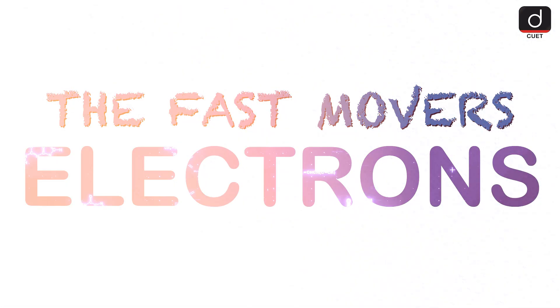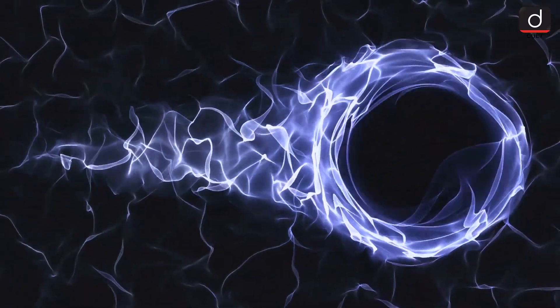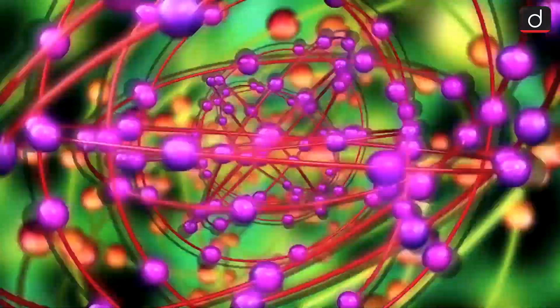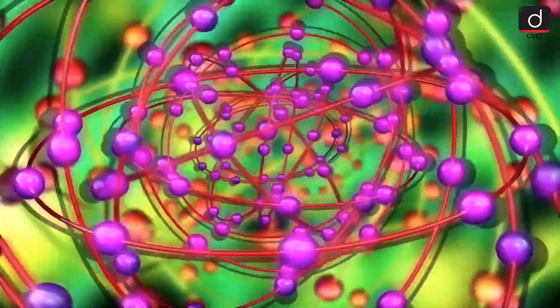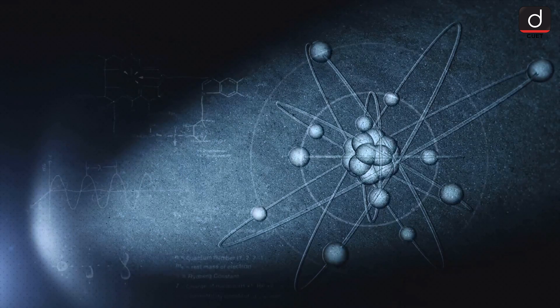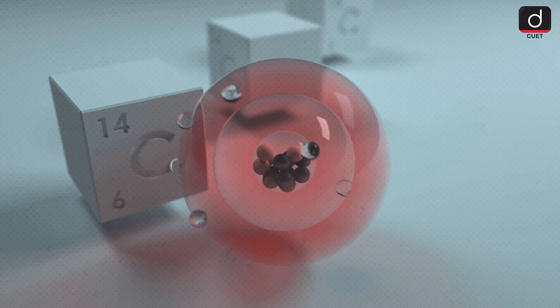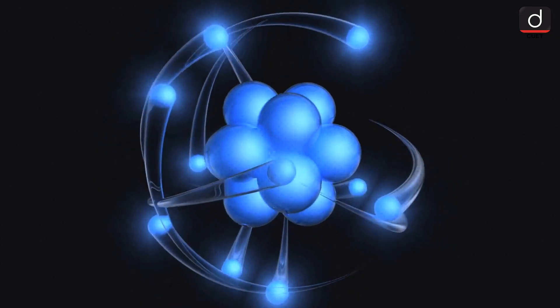3. Electrons. The fast movers. Electrons are like tiny, negatively charged particles that zip around the nucleus at incredible speeds. They are much lighter than protons and neutrons and are found in specific regions called energy levels or shells.